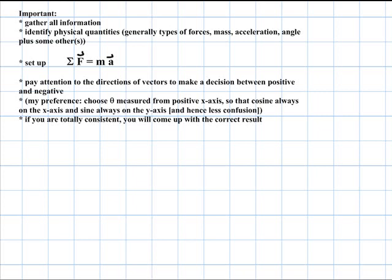Gather all information from a word problem. Identify all the physical quantities, and in these chapters that means the types of forces. For example, thrust, weight, lift, friction, and so on. Mass, acceleration, angle, and then there could be one or the other like velocity or acceleration.